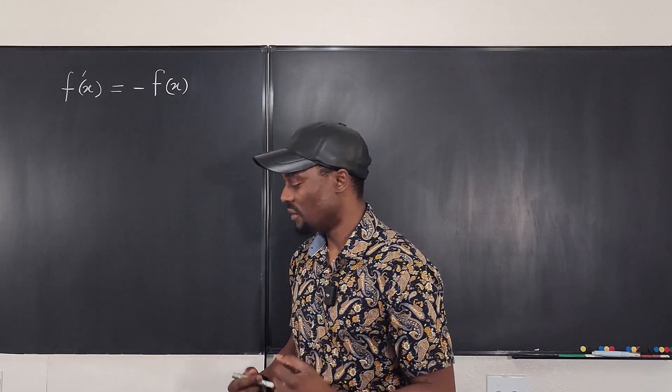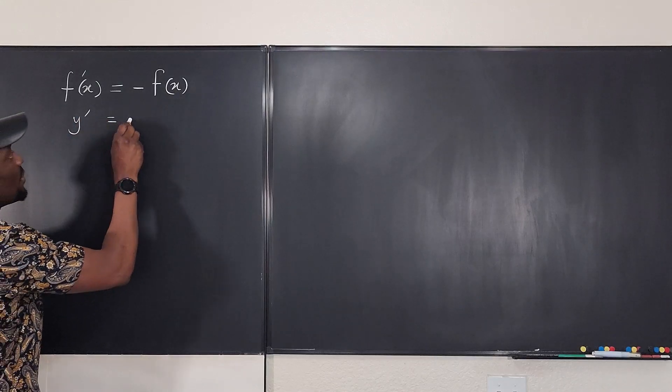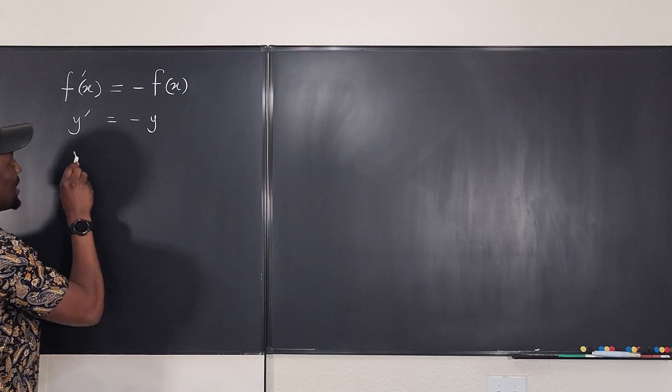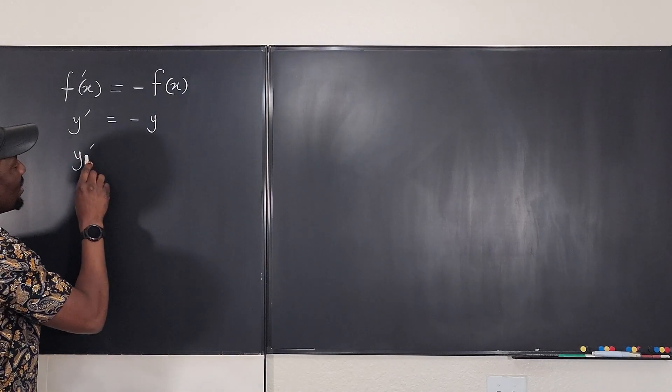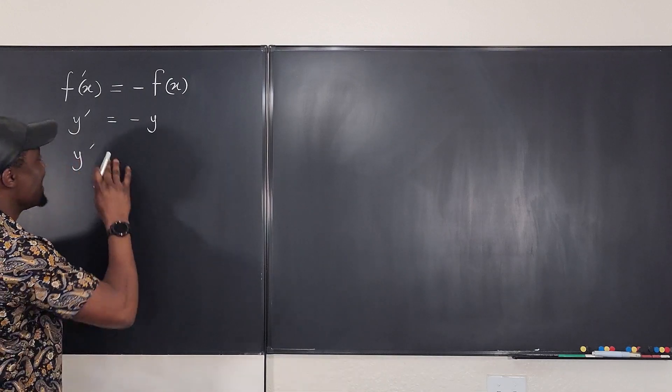Let's rewrite the function. We're going to get y prime equals negative y. Now, you can see how easy it is to solve this because now I'm going to say y prime. What is y prime? Wait, we know that y prime is dy dx.